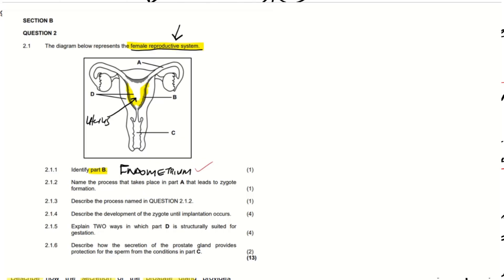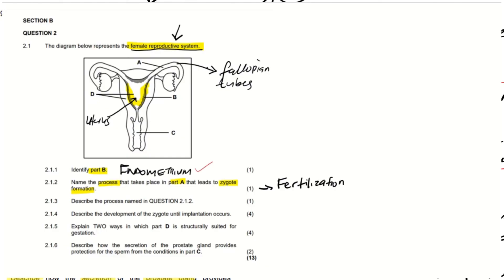Question 2.1.2 says we should name the process that takes place in Part A that leads to zygote formation. If we look at Part A, it is actually showing us the fallopian tubes. So in the fallopian tube, what is the process that happens there that creates a zygote? We call that process fertilization. Fertilization is the process whereby the egg cell or the ovum will fuse with the sperm cell, and that happens in the fallopian tube.